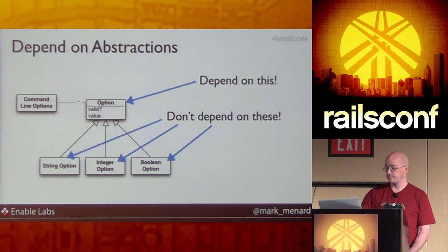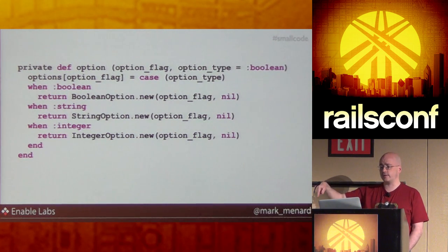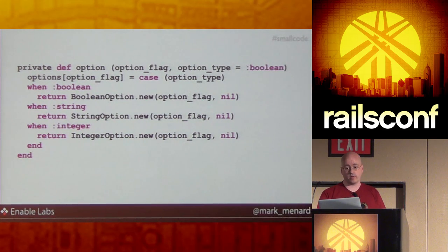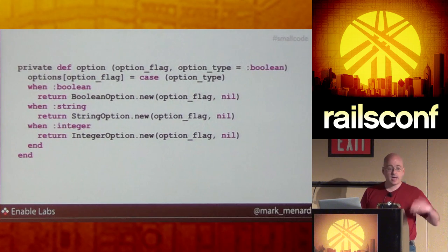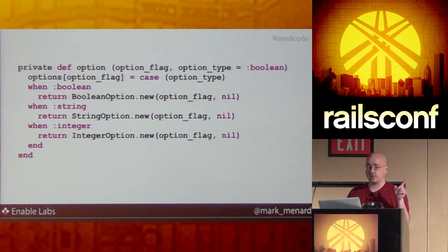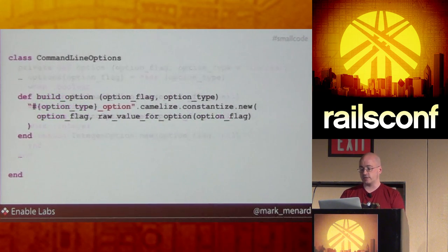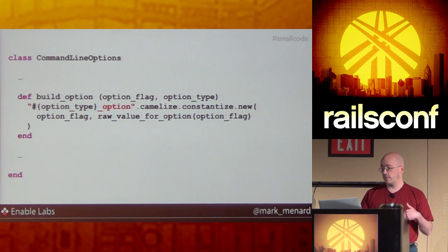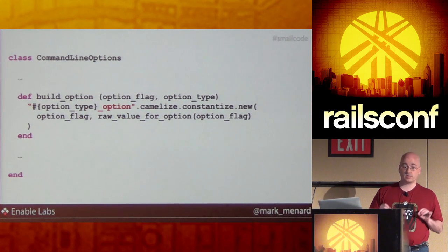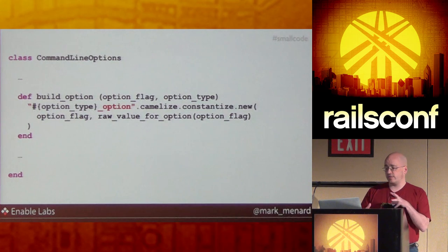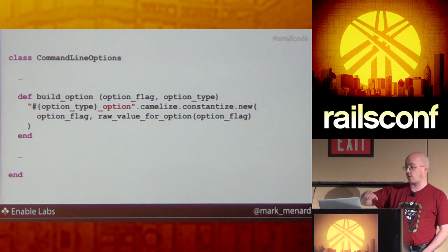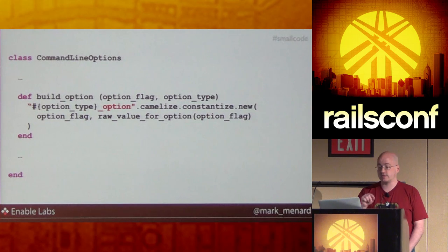I could go down the case statement road again and check the option type, instantiating the correct type based on the symbol — but I'm not going to do that, because that would tie our command line class to those concrete types. Instead, I'm going to use the dynamic capabilities of Ruby to instantiate those objects using naming conventions. For string, we have a string option class; for boolean, a boolean option class; et cetera. This very simple change takes our command line option class from depending on those concrete implementations and flips it to depending on the abstraction. This is dependency inversion from the SOLID principles in practice.